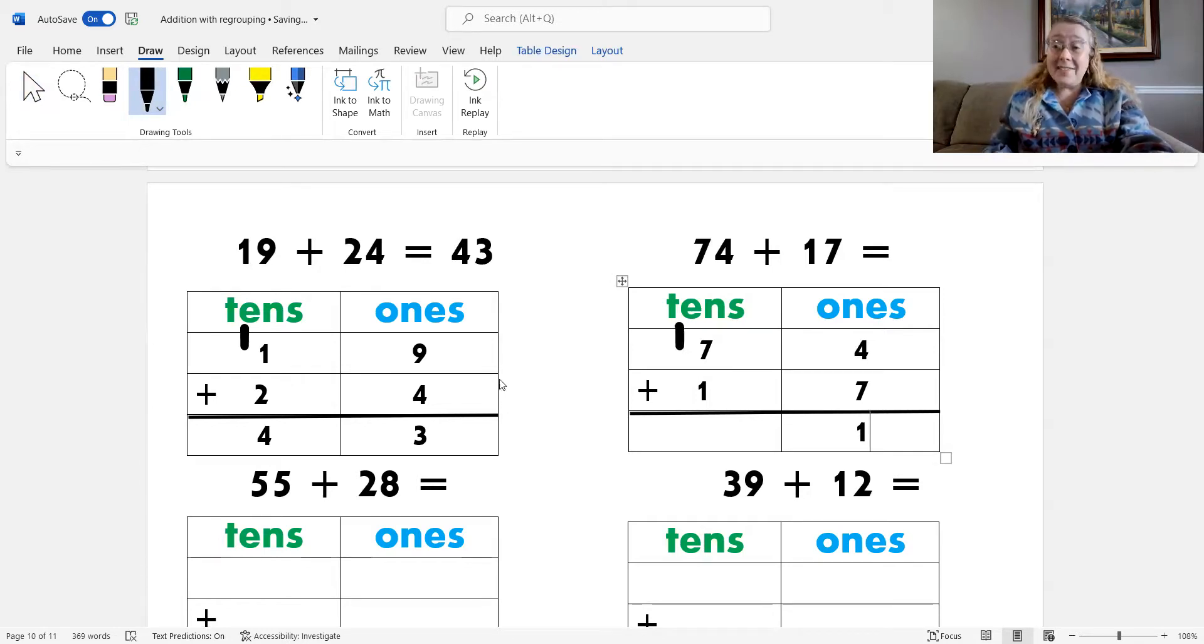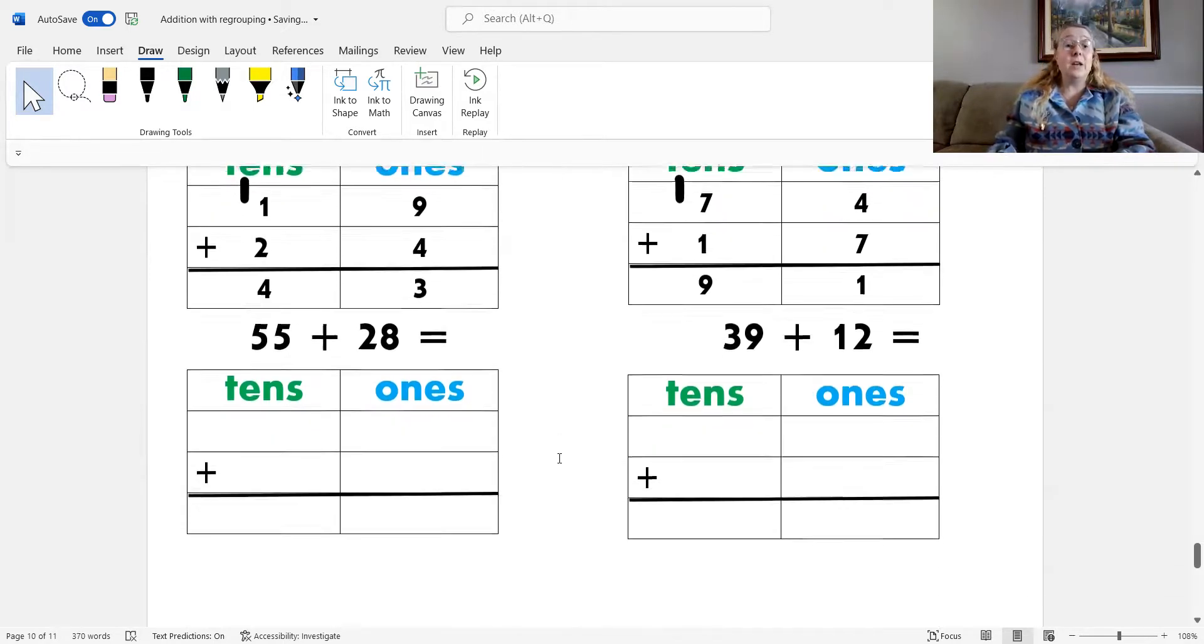Now, I can add the tens. 1 plus 7 is 8, plus 1 more is... Yeah, 9. That's great. Okay, and then I can write up the answer. 74 plus 17 equals 91. Very good. Okay, here's the next one to solve.